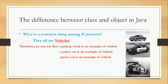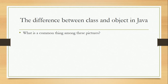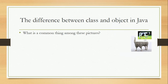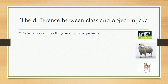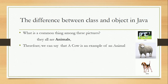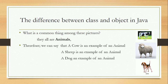Let us see another example. Take a look at these pictures. What is a common thing among these pictures? Simply, they all are animals. Therefore, we can say that a cow is an example of an animal, a sheep is an example of an animal, and a dog is an example of an animal.